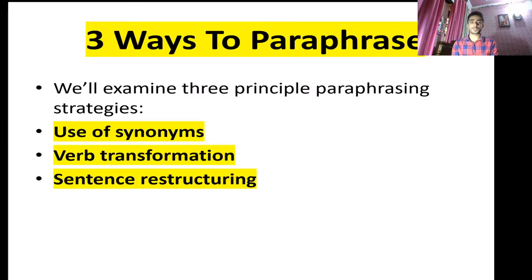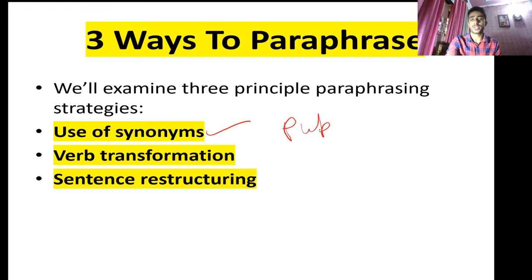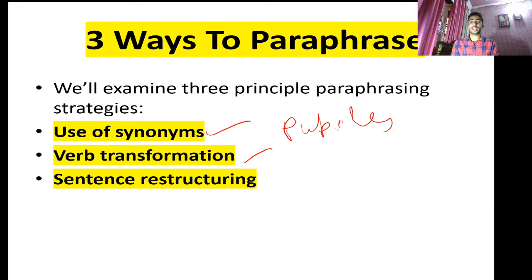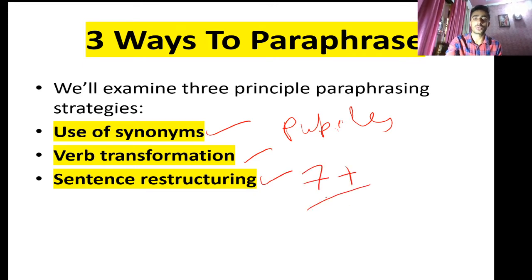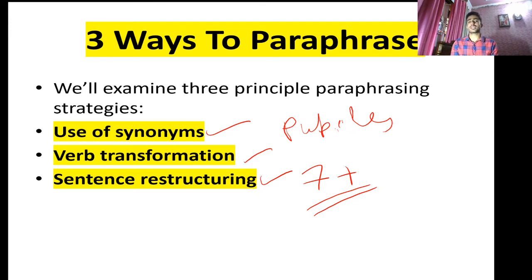There are three ways to paraphrase. First, you can use synonyms — for example, changing 'students' to 'pupils.' Second, verb transformation — for action verbs like 'increasing' you can write 'upsurging,' or for 'spending' you can write 'expanding' or 'allocating.' Third, sentence restructuring, which is for advanced students who have strong knowledge of active and passive voice. For band seven scores, using synonyms and verb transformations is the best approach.